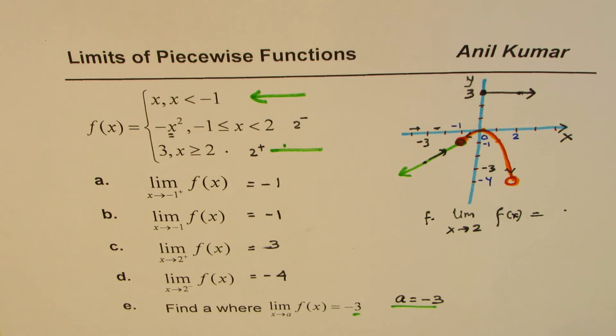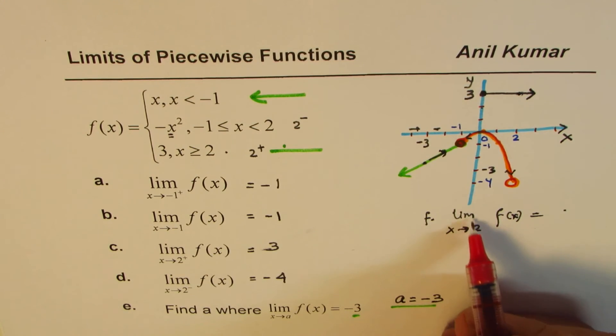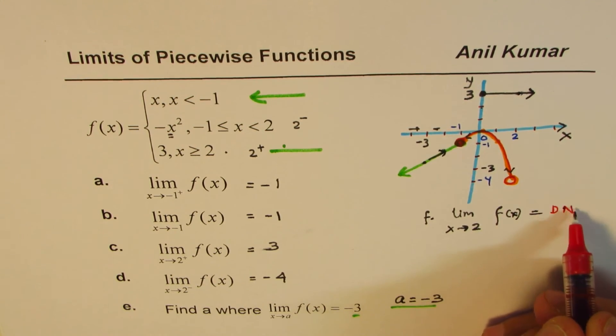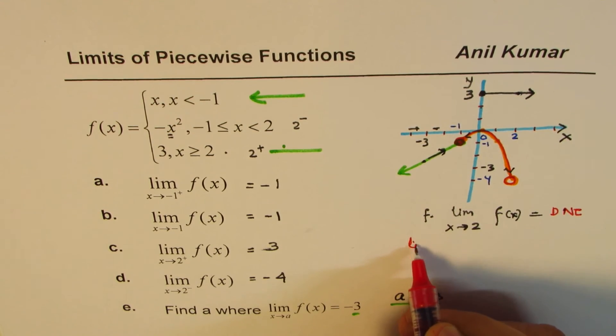With that, I hope it is very clear how to find limit of the functions when we are given piecewise functions. Some of you must have got this answer by now. We say limit at 2 does not exist. The reason is that